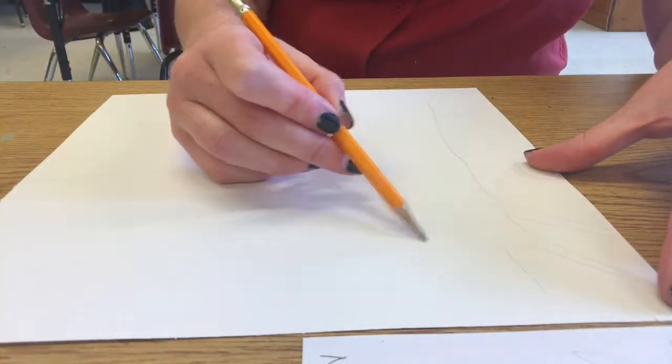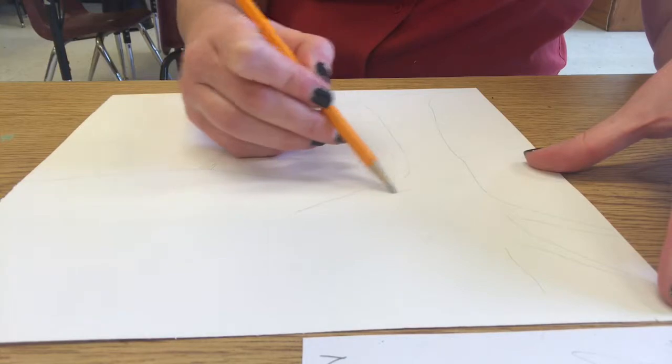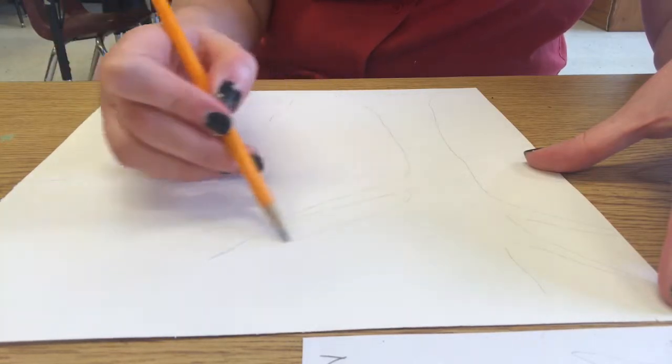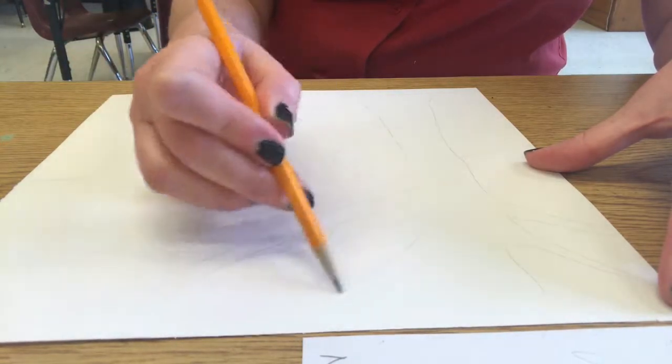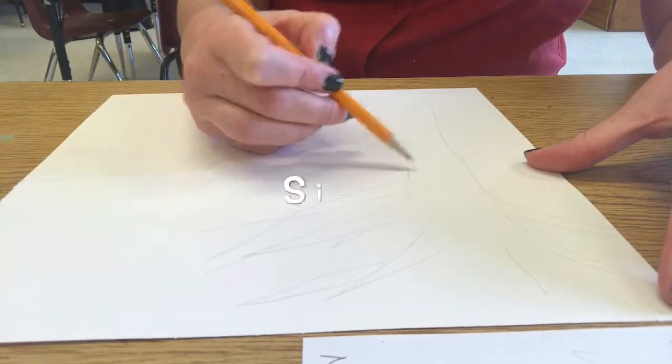As I'm drawing this I want you to look carefully and see how many different ways I used to show depth. Did I use overlapping? Did I use placement? Or did I use size?